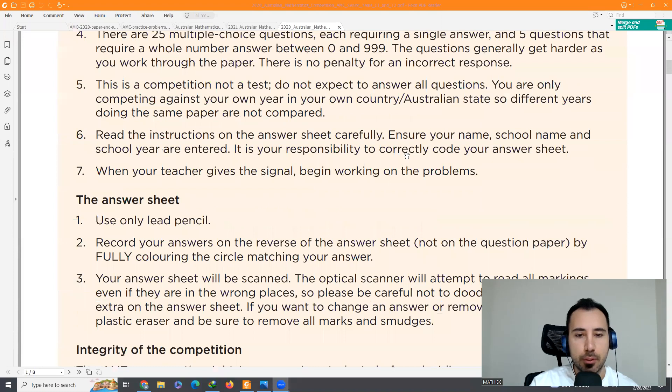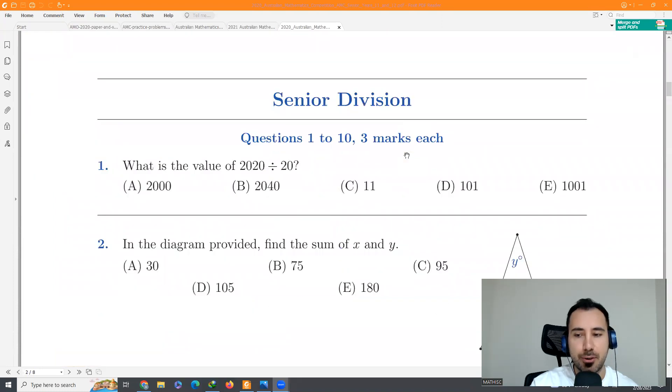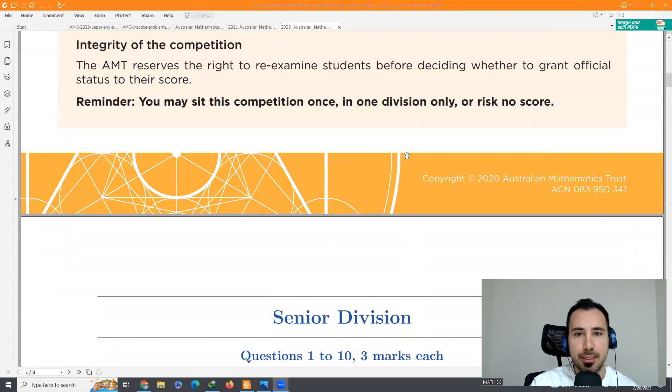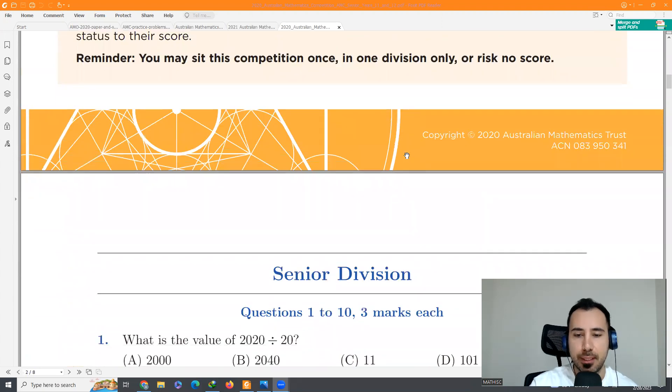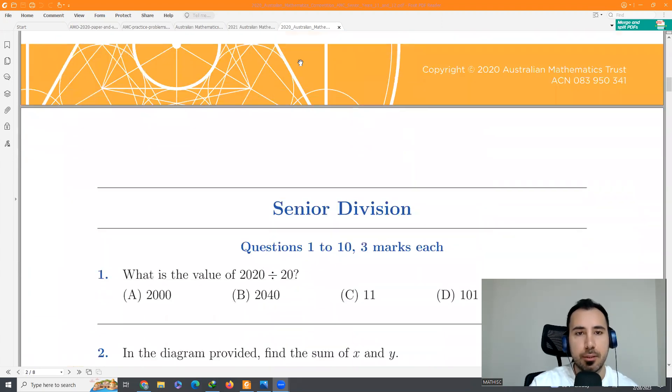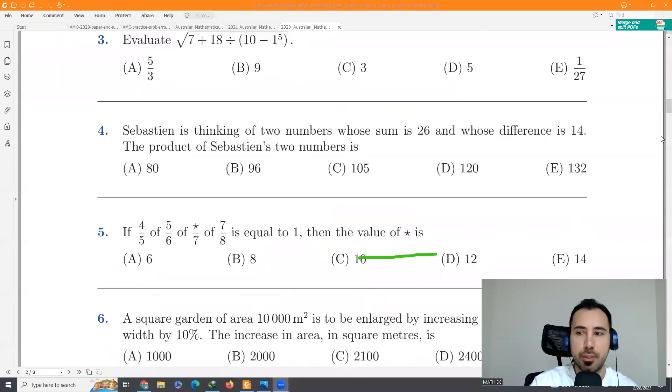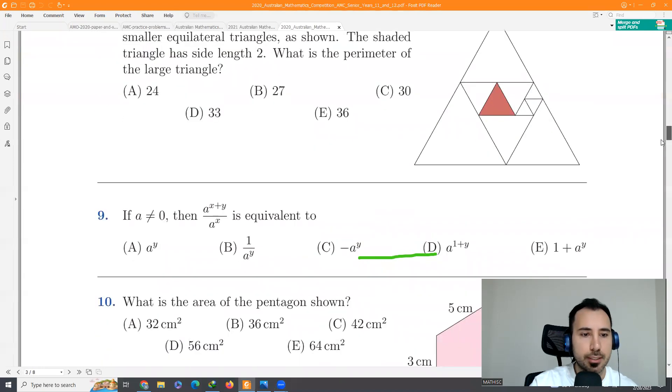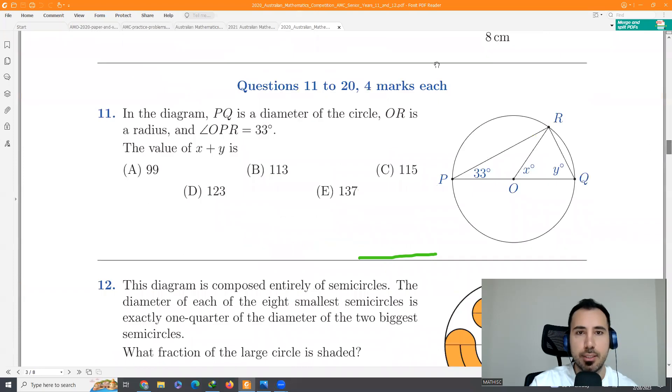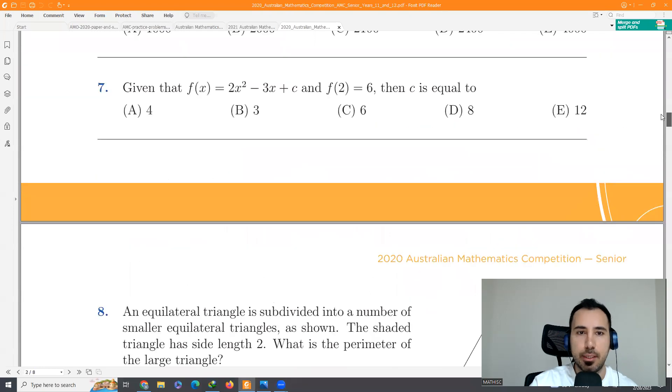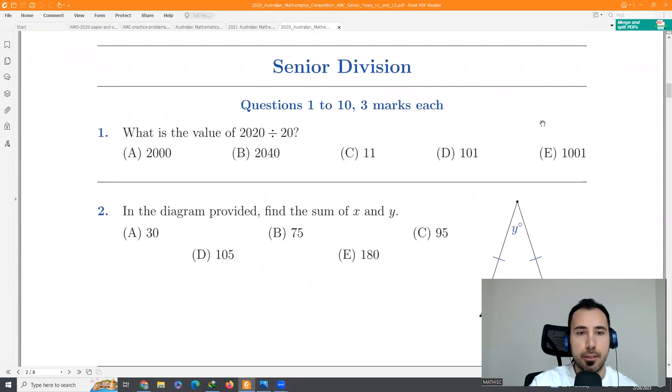As you know, questions are starting with the easiest and then they get more difficult. For that reason also, they have less marks. Each question here is three. And if we go to the next 10 questions, you can see that they will have four marks, of course, because they are more difficult and it will take more time to answer.